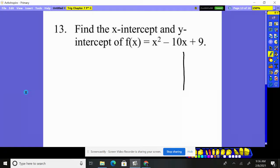If you think about this, this is a parabola. More than likely, it's going to cross in two spots on the x-axis, so the x-intercept is going to have two answers. The y-intercept will just have one point.